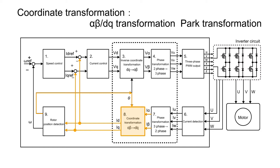Rotor position detection is performed every PWM cycle. At startup, position detection is unstable. Therefore, an angle derived from the RPM set point is used instead of the detected theta value. This transformation is called Park transformation.